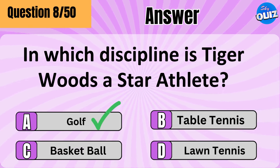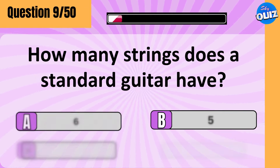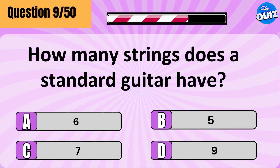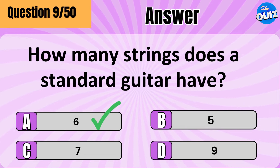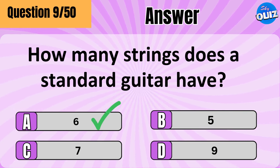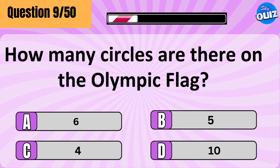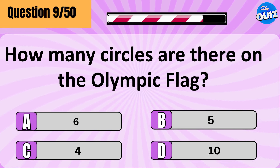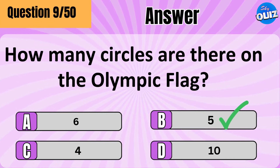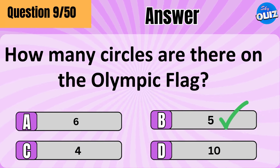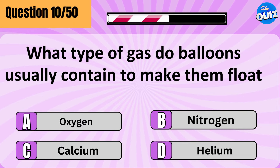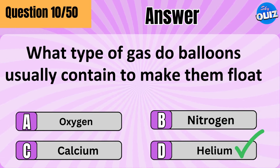The correct answer is golf. How many strings does a standard guitar have? Six. How many circles are there on the Olympic flag? Five circles. What type of gas do balloons usually contain to make them float? Helium.